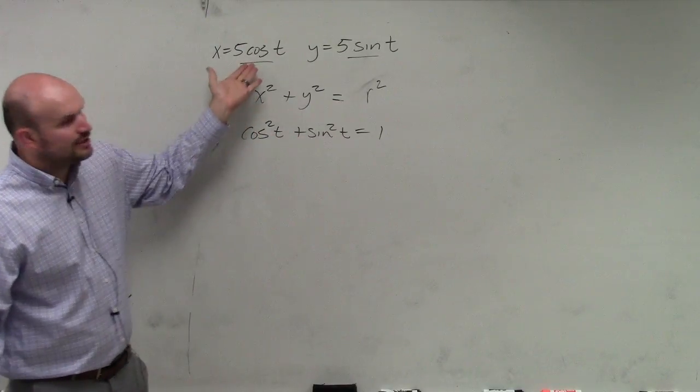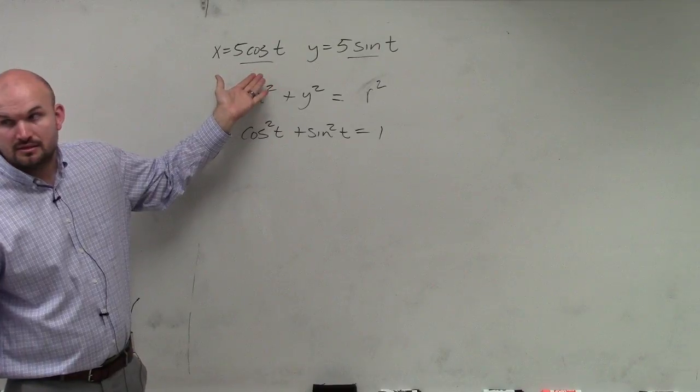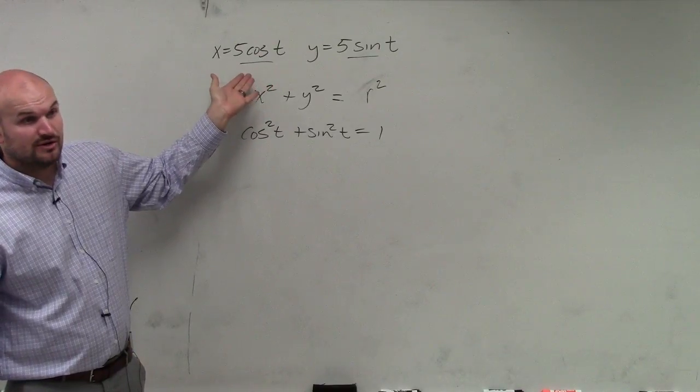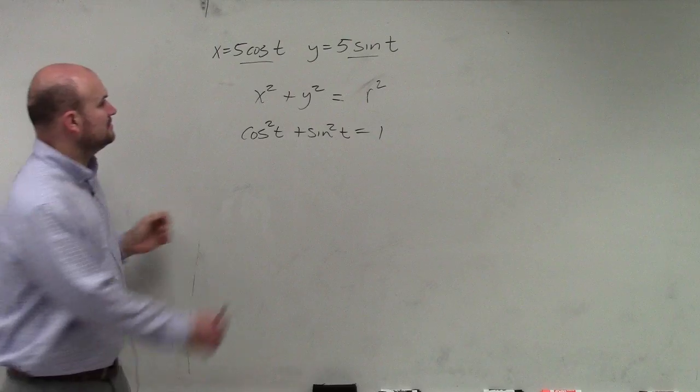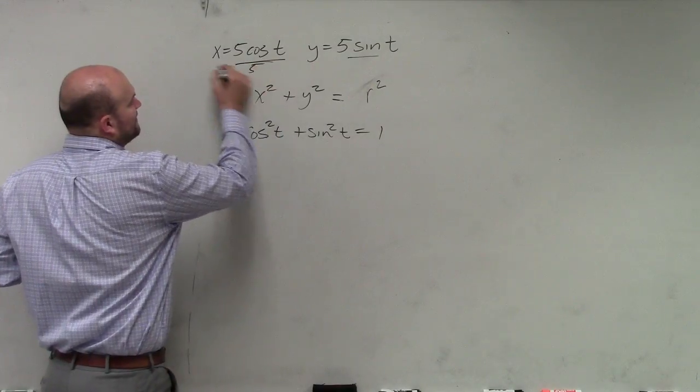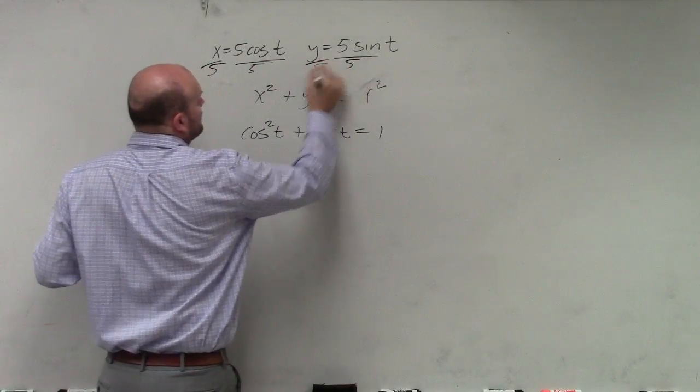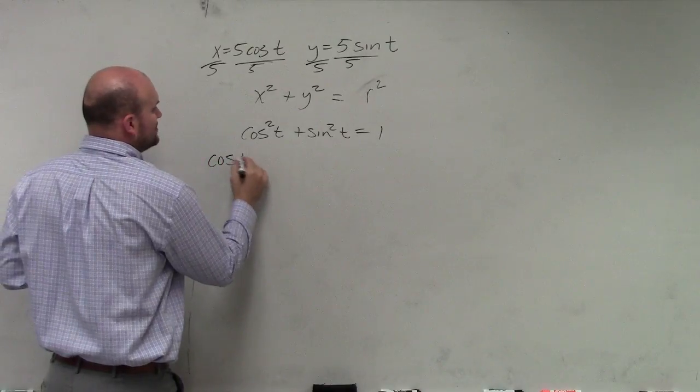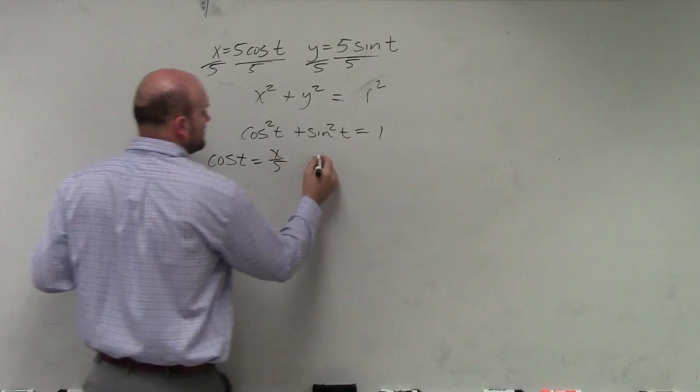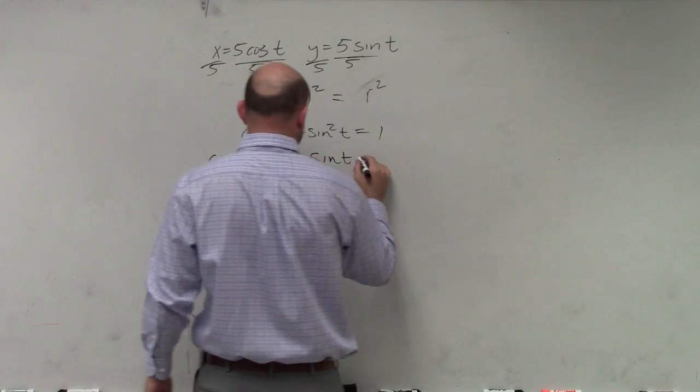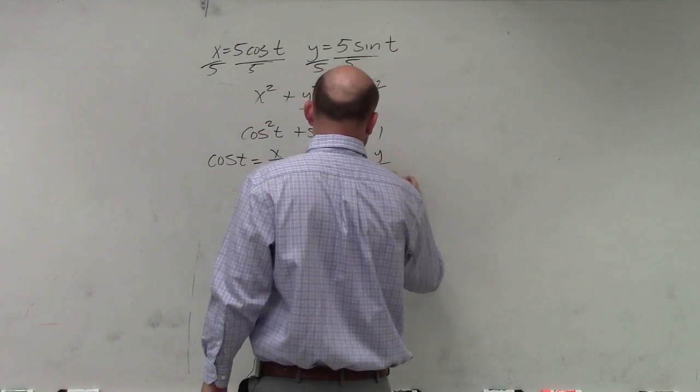So do we know what cosine of t is in this case? No, but can we figure out what cosine of t would be based on this? Sure. Just divide by 5 on both sides. So therefore, we could say, well, cosine of t is x over 5. Sine of t is equal to y over 5.